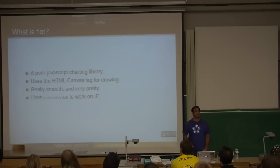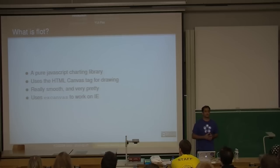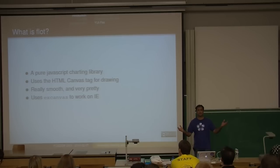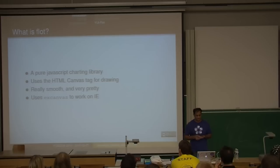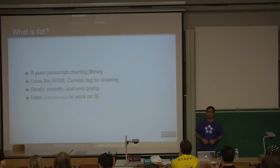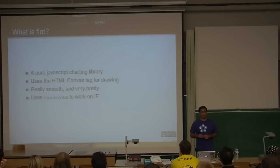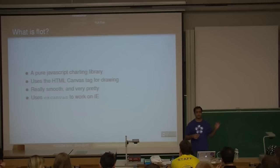What is Flot? Flot is a charting library written for jQuery. It's really cool and pretty — which is what we like Flash for — but without those downsides. It was developed by a company named IOLA, released under an MIT license. It uses the HTML Canvas tag for drawing charts, is really smooth, and uses ExCanvas to work on Internet Explorer. It currently supports Firefox 2+, Internet Explorer 6+, Opera, Safari, and Konqueror.